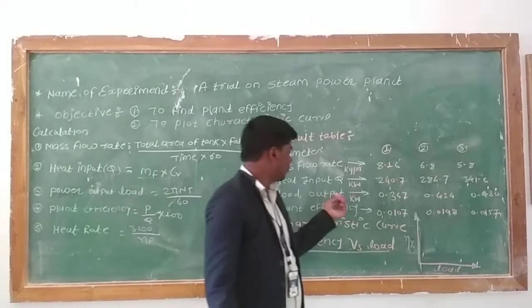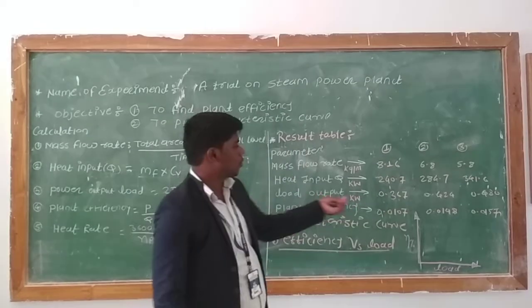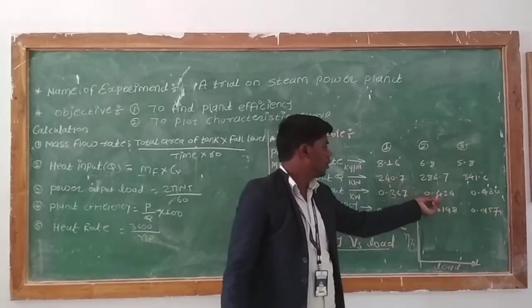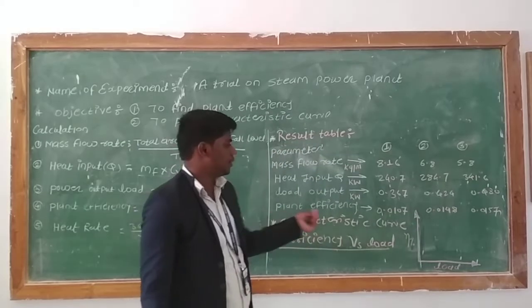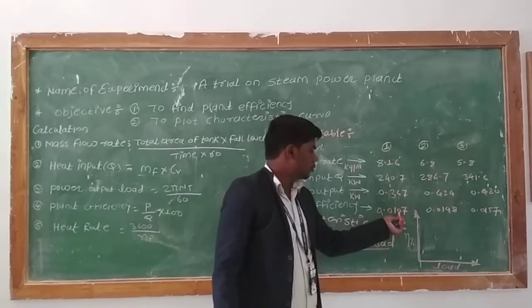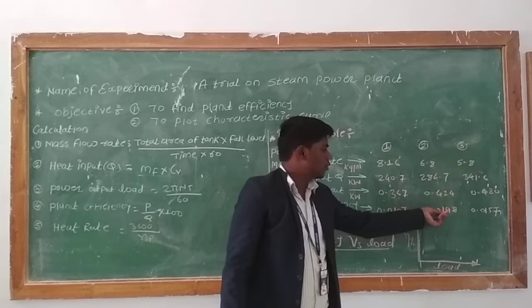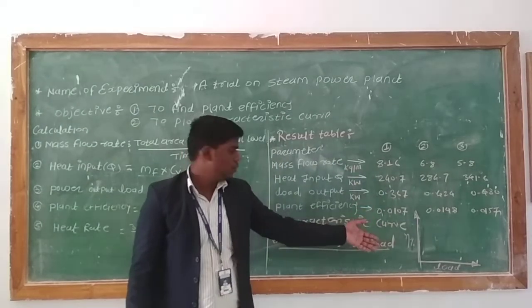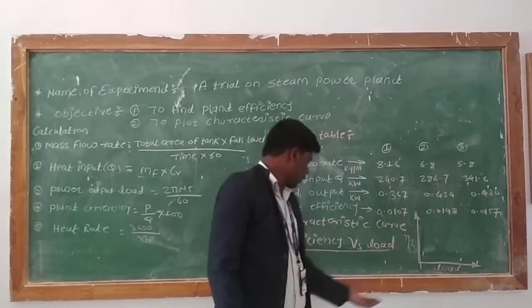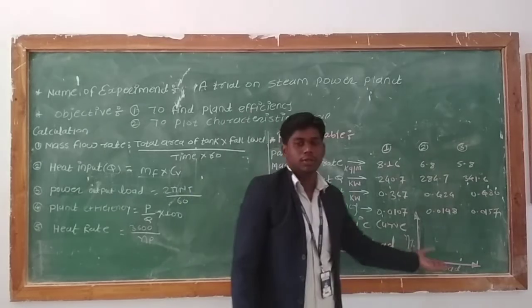Power output load: 0.367, 0.424, 0.480. Plant efficiency: 0.0107, 0.0148, and 0.0157. With these readings we can plot the curve of efficiency versus load.